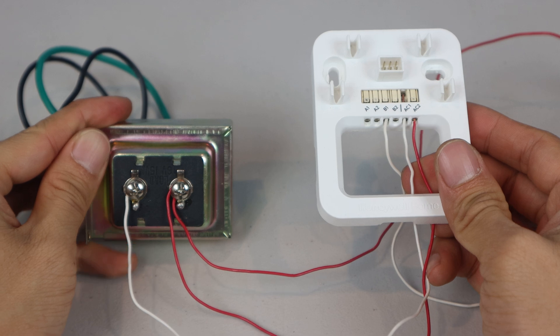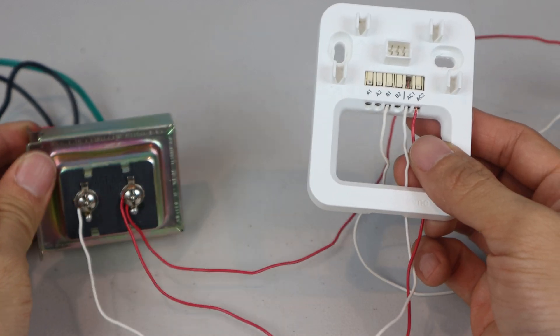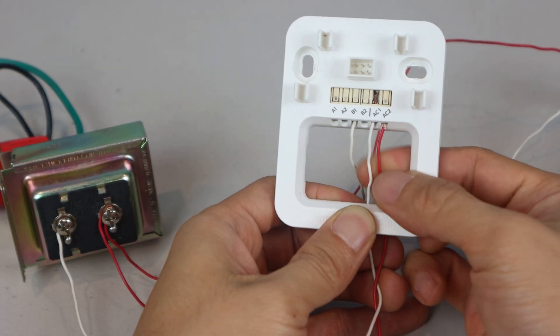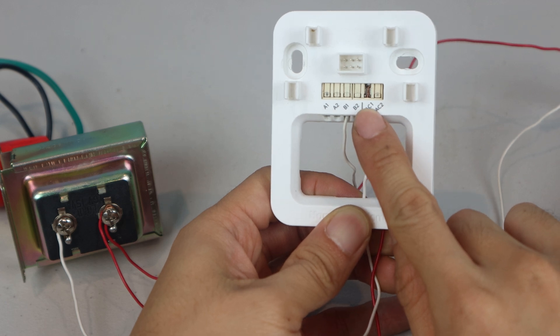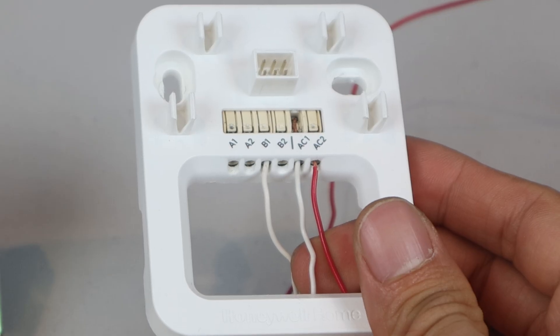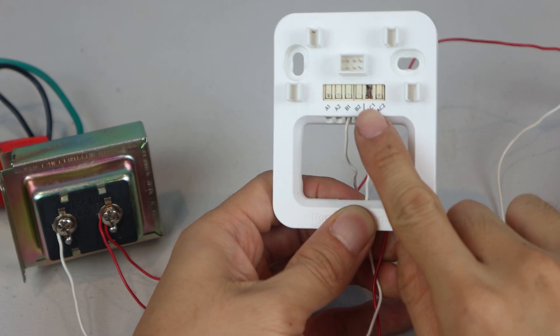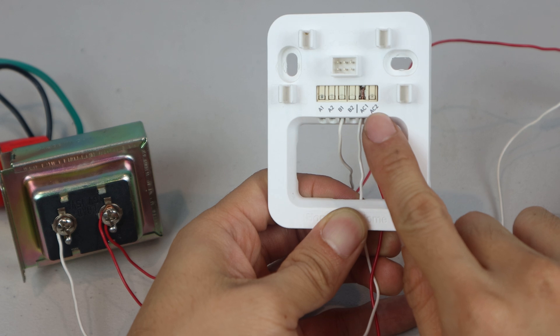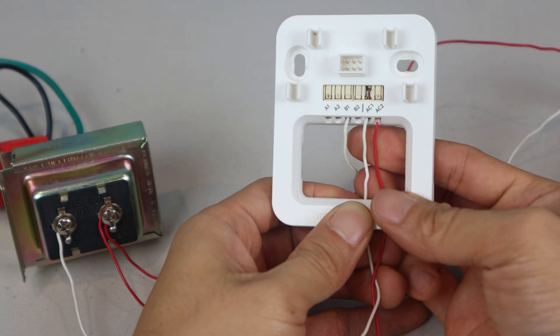One side of my transformer, which is 16 volt 15 VA, will be hooked up to the AC1 terminal. That's the white wire on the left, and on the other side of the transformer, there are two red wires. One of these goes to the AC2 terminal. So just remember that AC1 and AC2 are the ones that connect to the transformer.